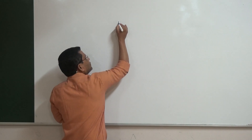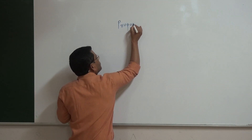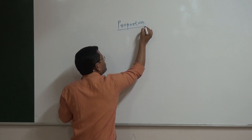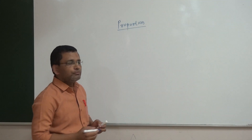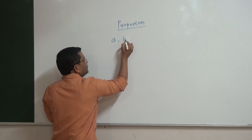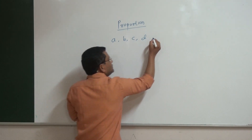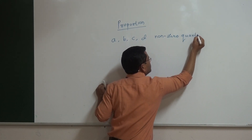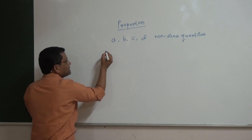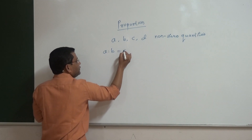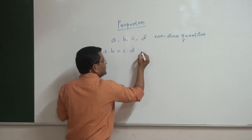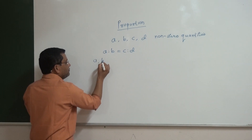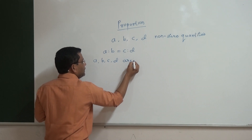Today we are going to deal with the part of ratio and proportion — specifically proportion. What does proportion mean? When we write four non-zero quantities, for example A, B, C, D, and we say that A is to B equal to C is to D, then we can say that A, B, C, D are in proportion.